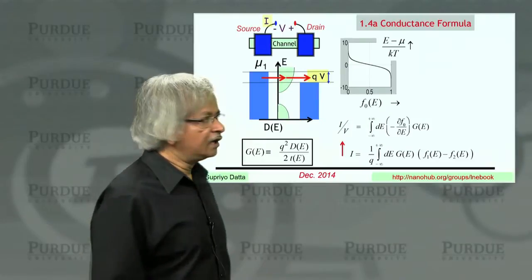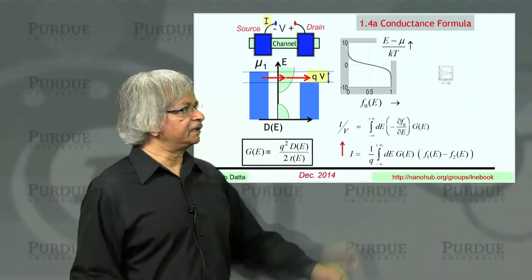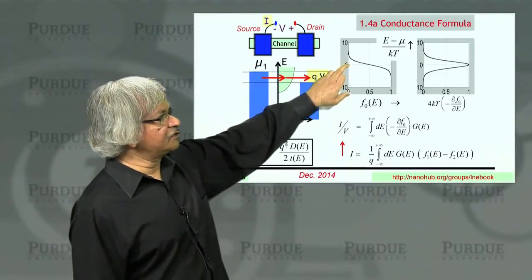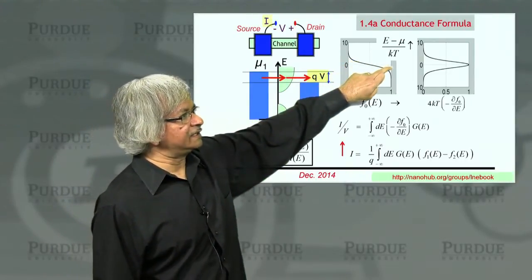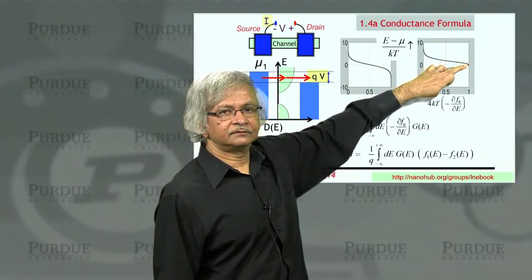Now, what about the derivative of this? That's this dF/dE. The derivative looks something like this: right around zero, the derivative is the highest - that's where it's changing the most. That's this peak value.